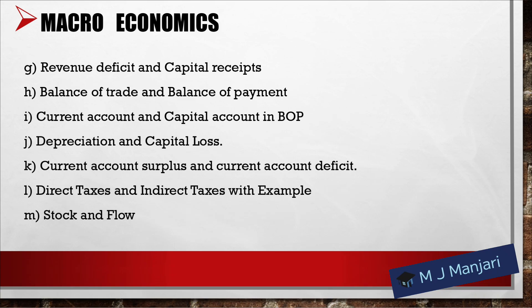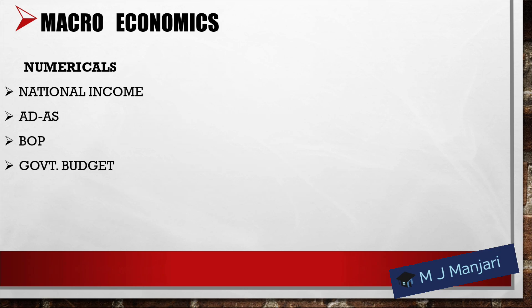H. Balance of trade and balance of payment. I. Current account and capital account in BOP. J. Deposition and capital loss. K. Current account surplus and current account deficit. L. Direct taxes and indirect taxes with example. M. Stock and flow. Numericals will be based on national income, ADAS, BOP and government budget.